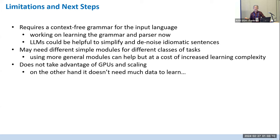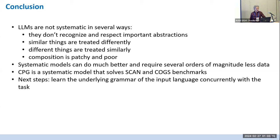To sum up: LLMs are not systematic in several ways — they don't consistently recognize and respect important abstractions, similar things are treated differently, different things are treated similarly, and compositionality is patchy and poor. Maybe it'll get better with more scaling. Systematic models can do much better: in this limited setting they require several orders of magnitude less data and solve benchmarks testing out-of-domain generalization.